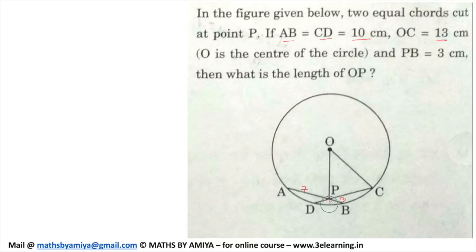So I just do one construction. I say this one is T and I am extending PO. Say this one is S. So by the same chord product rule, we can say AP into PB is equal to SP into PT.